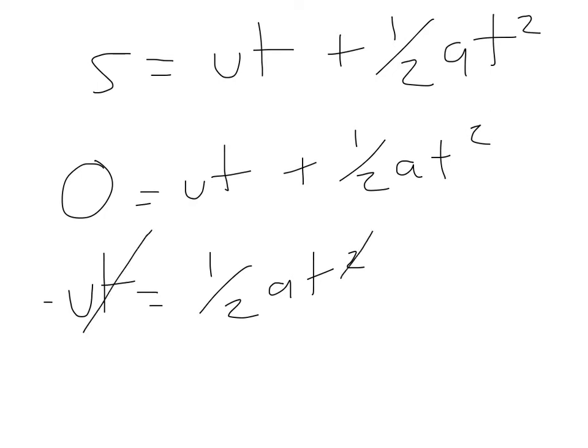So in other words, I know that now minus U is equal to one half AT. Now if we go back to that again, we go minus U is equal to half AT. We want T, we don't know what T is. So we're trying to find that.